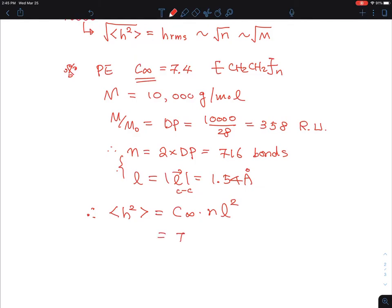I can say the end-to-end distance vector squared is C∞ times NL², and that's 7.4 for polyethylene, and then N value is 716, and then you can put 1.54 angstroms squared. And so I want to calculate the RMS average, and then I need to put it into my calculator to find out what's the number.